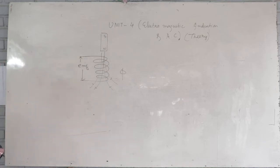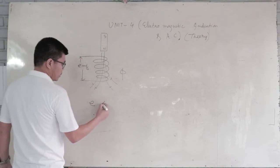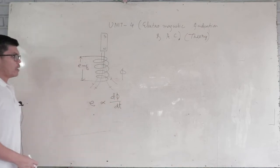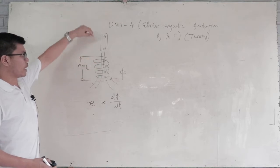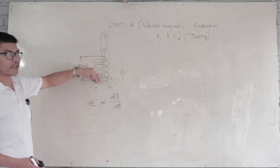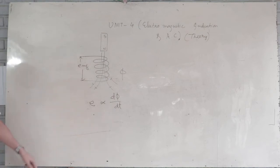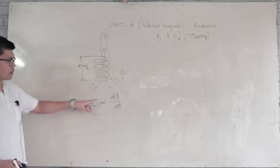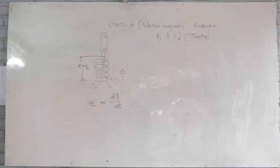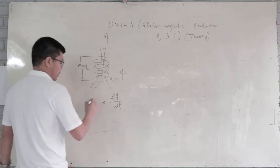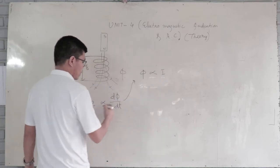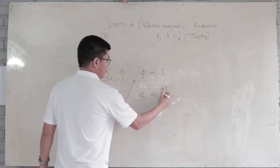Faraday's law: EMF is proportional to the rate of change of flux. The rate of change of flux relates to the magnetic field. The EMF is strong when dΦ/dt is very large. If the flux is not changing, then EMF is not proportional — E equals dΦ/dt.